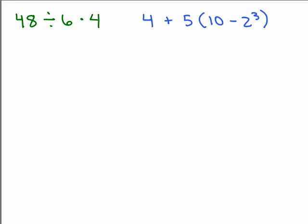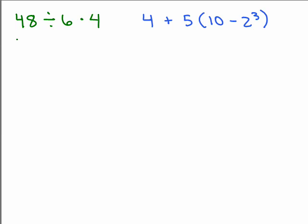Here are a couple more problems. First: 48 divided by 6 times 4. There are no grouping symbols and no exponents, so we look for multiplication or division. We have both, so we go from left to right — first do 48 divided by 6, which is 8, then 8 times 4, and the answer is 32.